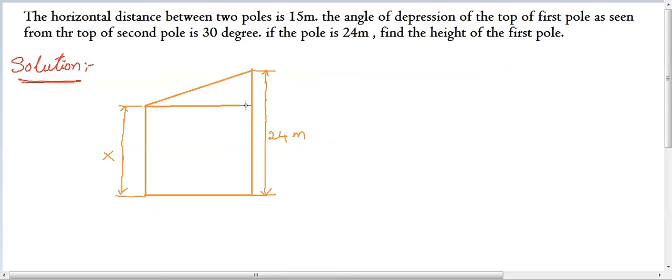And height of the second pole is 24 meters. And also given the angle of depression of the top of the first pole. So this angle will become 30 degree.